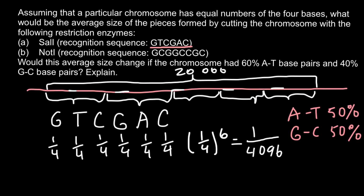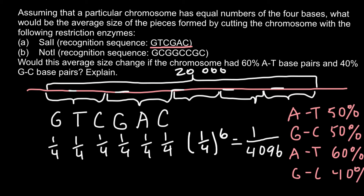Now let's look at the second part of our problem. The question is: would this average size change if the chromosome had 60% AT base pairs and 40% GC base pairs? This time we must account for the fact that adenine and thymine together make 60%, while guanine and cytosine make 40%. That means adenine is at 30%, thymine at 30%, guanine at 20%, and cytosine at 20% frequency.